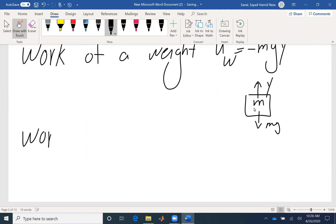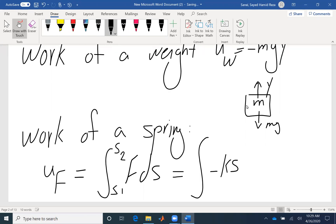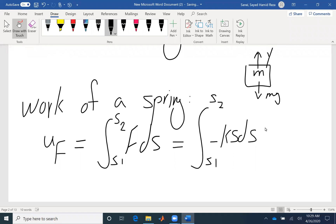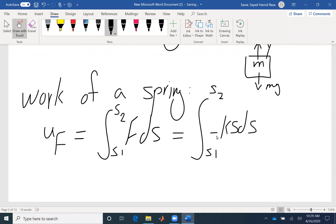So now let's talk about work of a spring. Work of a spring is the integral of F dS between the first displacement and the second displacement. The force would be negative KS. For a spring, the work is always negative because the force is always applied at the opposite direction of the displacement. If I take the integral, I get half K times S2 squared minus S1 squared.